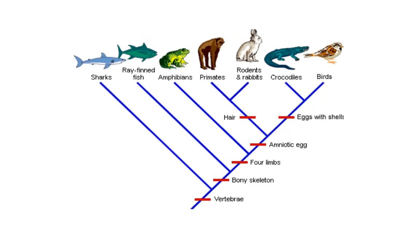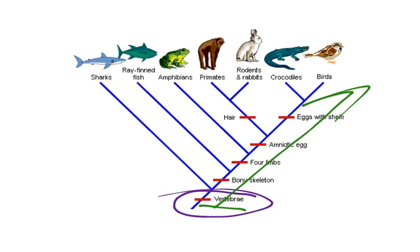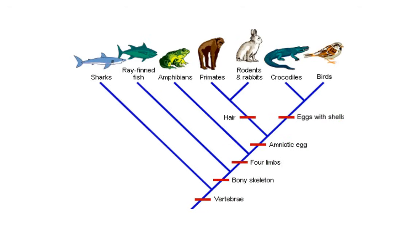For example, all the way down at the bottom is the characteristic vertebrae — those are the backbones. What that means is that everything in this cladogram that is beyond this characteristic has that trait. So everything that we see past this point is going to have the characteristic of vertebrae.